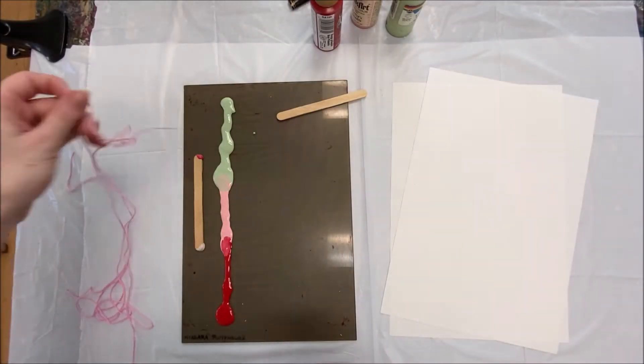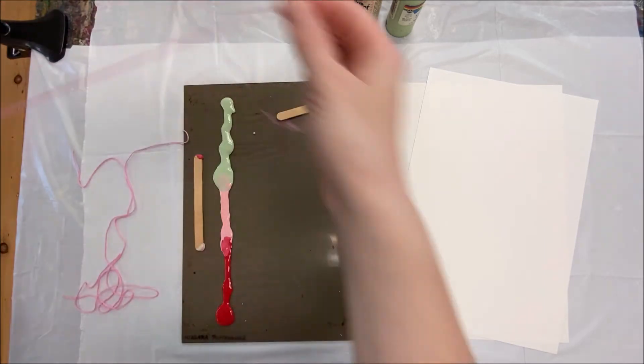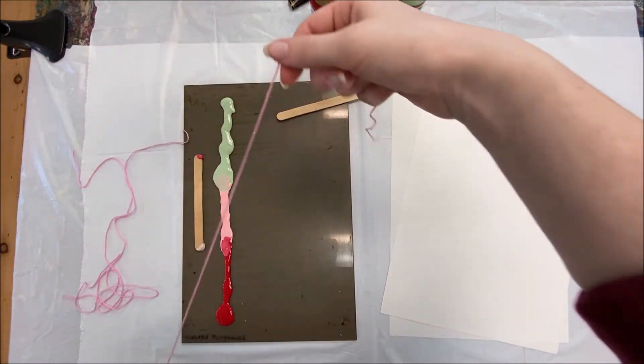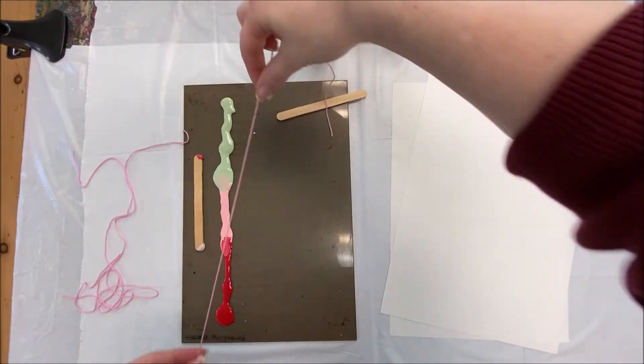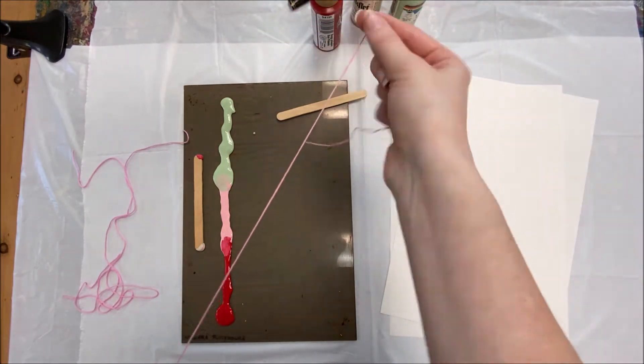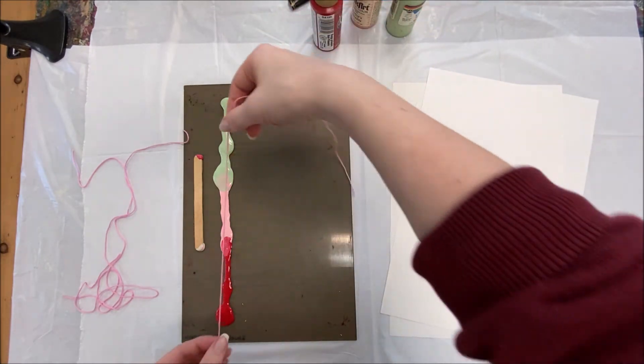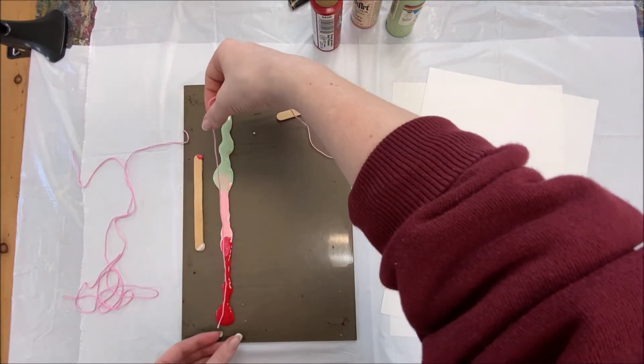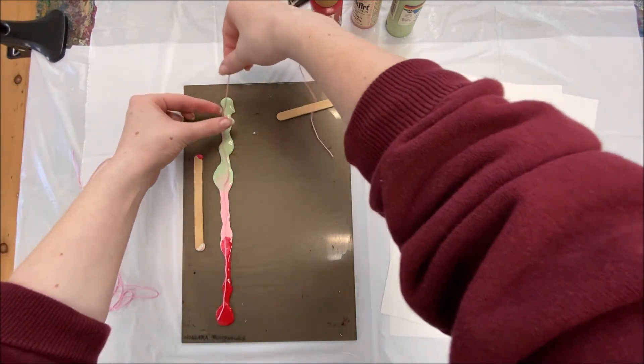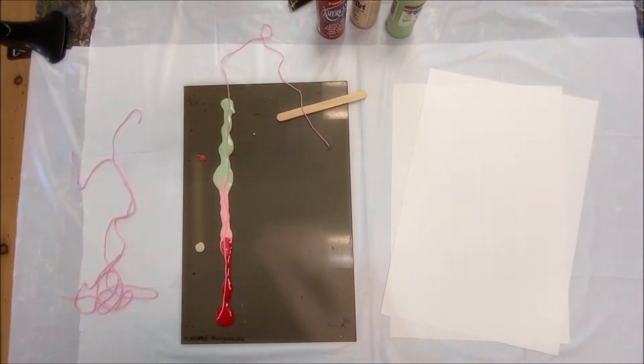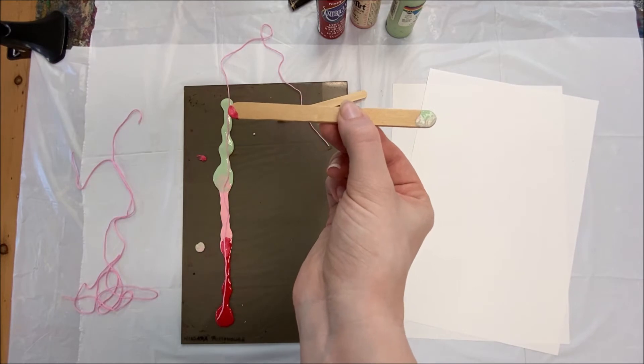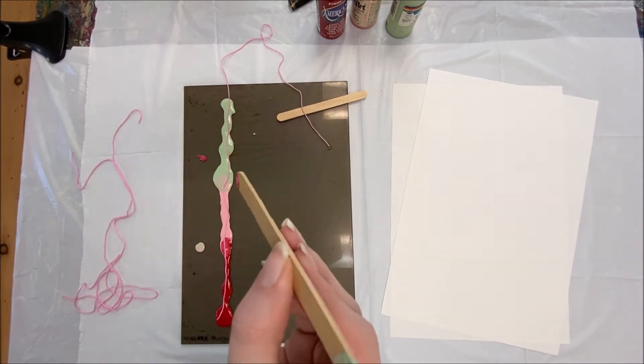Next we're going to take our first piece of string and lay it out in the paint. Make sure that you have some part of the string that you can grab onto. Using our popsicle stick, we're going to make sure that the string is completely covered.